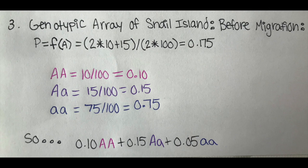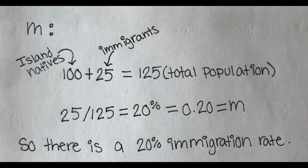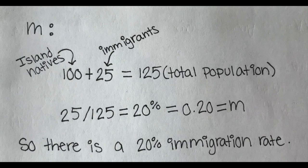We will repeat these last two steps for the island as well. Now we need to find m, which is the percentage of the new over total population that is from immigrants. Since Freddy migrated with 24 other friends, we find m by doing 100, which is the island natives, plus 25, which is the immigrants, which gives us 125, the total population.